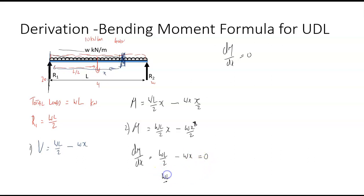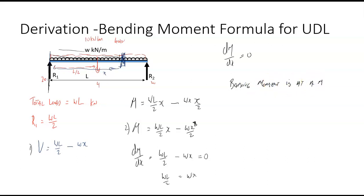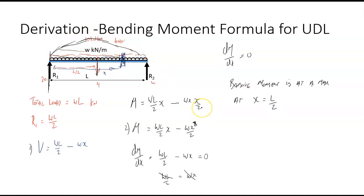So wL/2 equals wx, and dividing by w gives x = L/2. The bending moment is at its maximum at the midpoint of the beam, which makes sense.